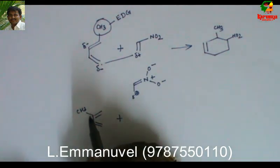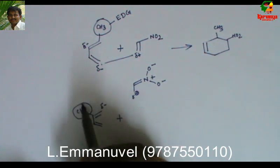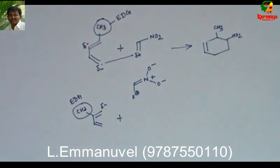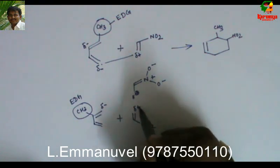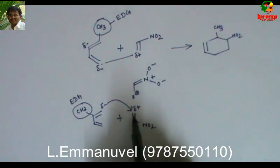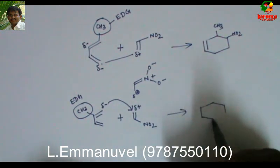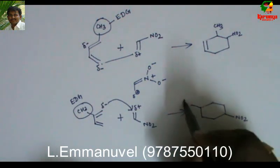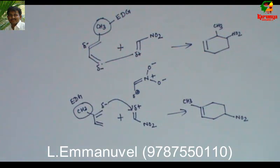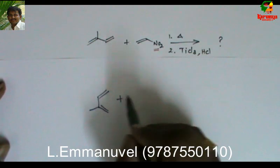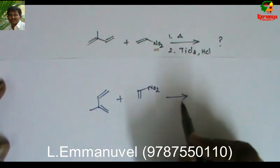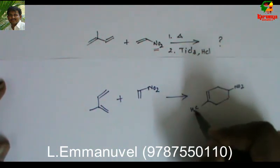With the second reactant arrangement, the electron density is more on the terminal carbon due to the electron-donating methyl group, so it attacks the carbon where δ+ is greater, giving a product where methyl and NO2 are on 1,4 carbons. Simply remember: 1,2 and 1,4 products are more favored in Diels-Alder; 1,3 is not favored.